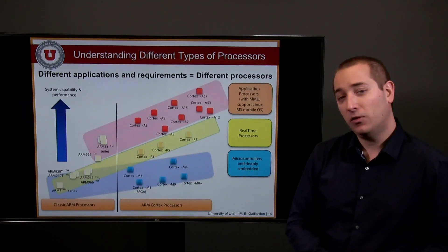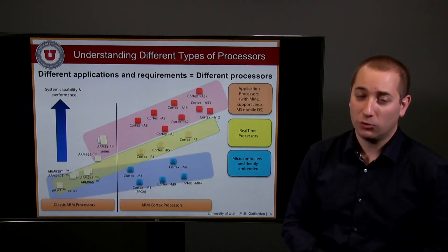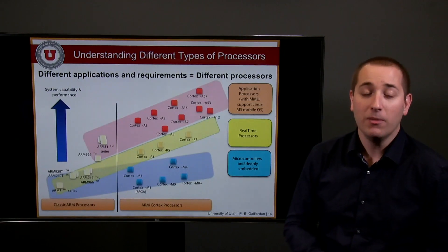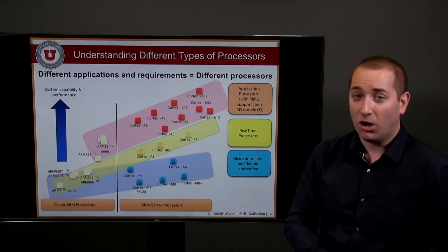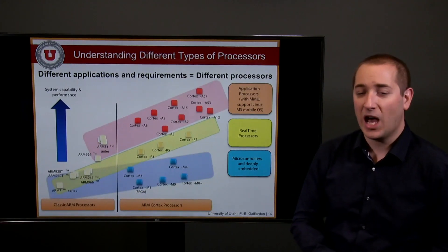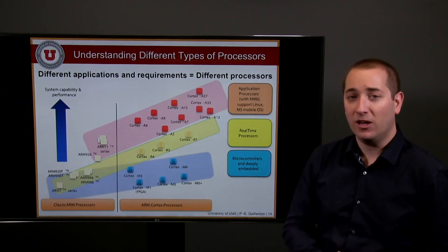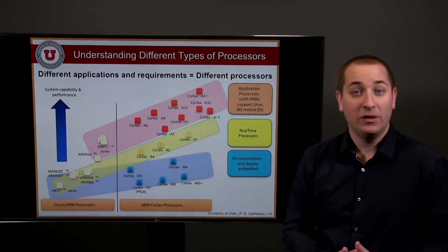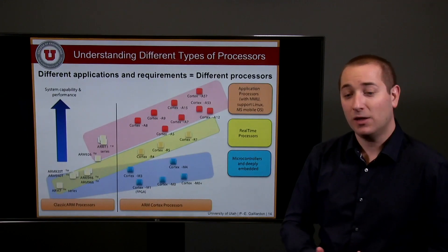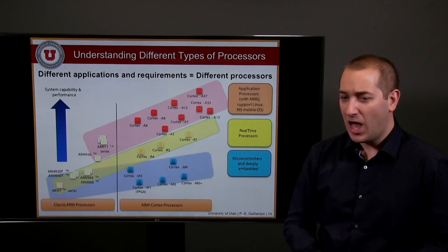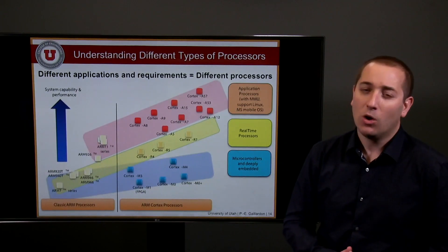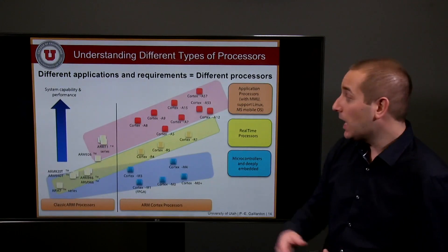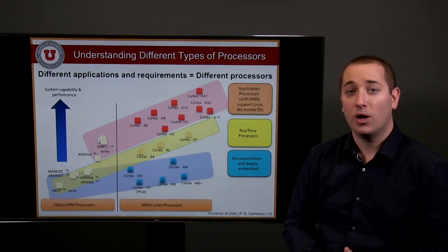The M family is really suited for microcontrollers and deeply embedded structures, having very low power budgets and minimal energy requirements. ARM also provides the R family, suited for real-time operations, with hardware mechanisms to meet real-time constraints. At the top in terms of complexity and performance, you find the A family — application processors — supporting embedded Linux, other mobile operating systems, memory management units, and so on. This is what you find in most smartphones today.